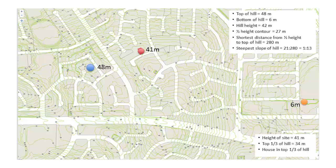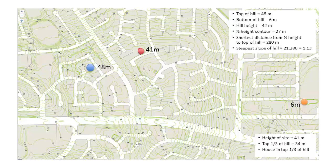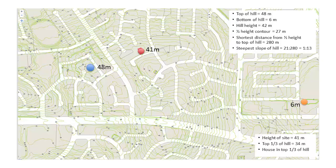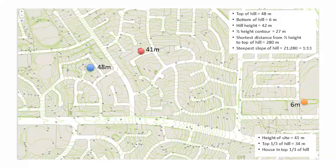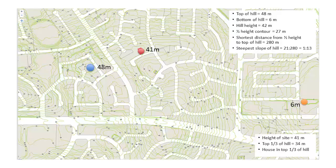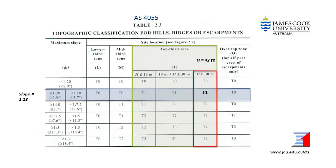The hill height is 42 metres. One third of the hill height is 42 divided by 3, which is 14 metres. The top third of the hill will be at 48 metres minus 14 metres, which equals 34 metres. Therefore houses in the top third of the hill will be higher than 34 metres. The red dot is the house site and it is at a height of 41 metres. As the site is above 34 metres, it is in the top third of the hill. Table 2.3 of AS4055 shows that for a slope of 1 in 13 — between 1 in 10 and 1 in 20 — and in the top third of a hill higher than 30 metres, the topographic classification is T1.